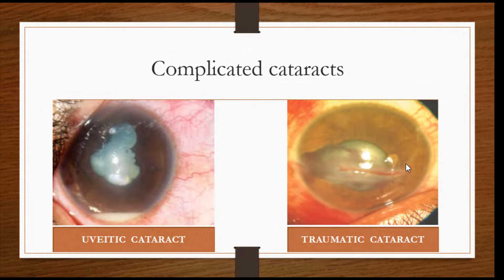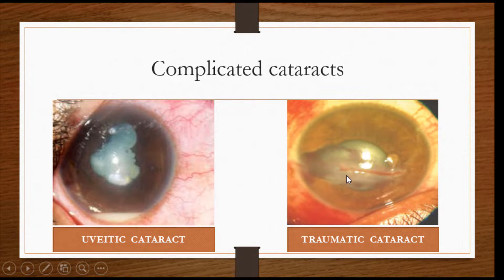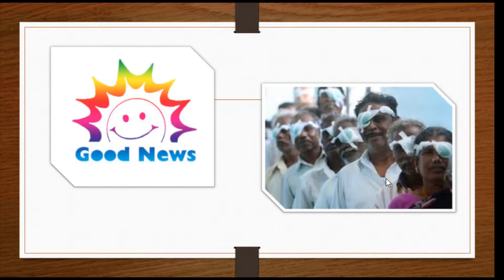We also have complicated cataracts because of uveitis — you will see a lot of posterior synechiae and hypopyon — and traumatic cataracts which are commonly seen because of trauma. Whatever may be the cause, the good news is we can always give good vision with the present technology and resources.